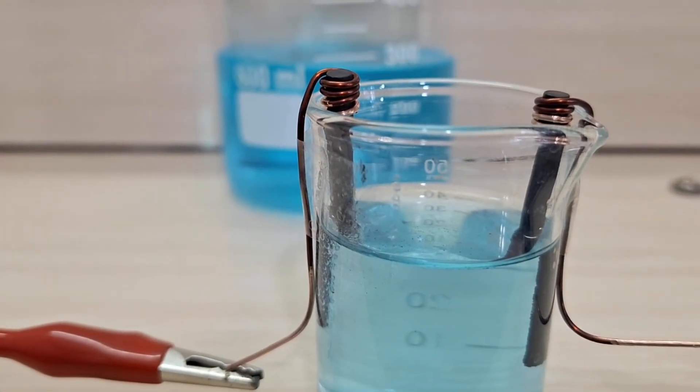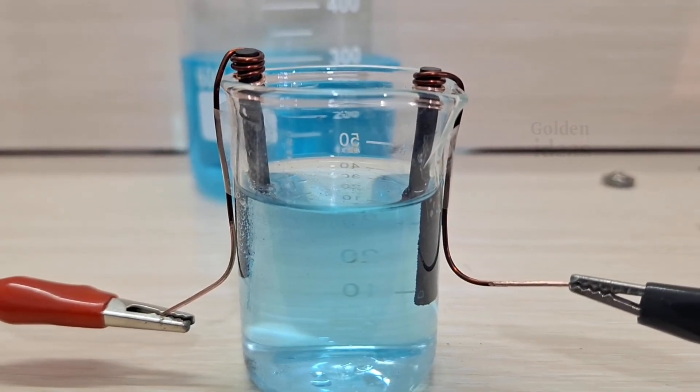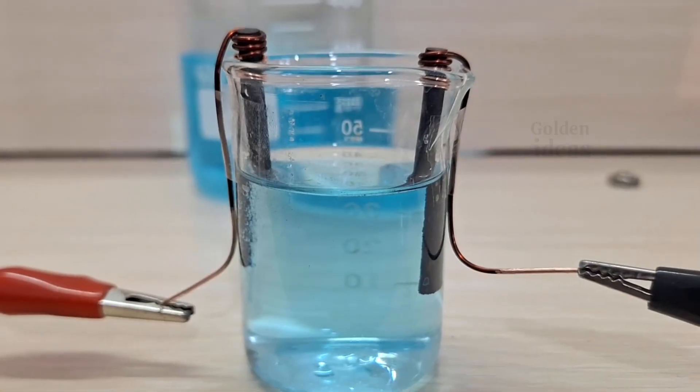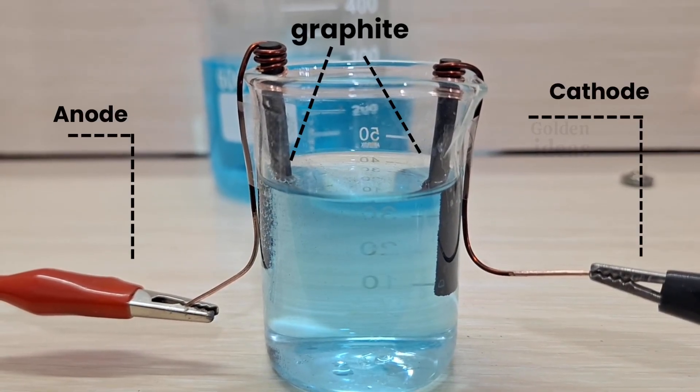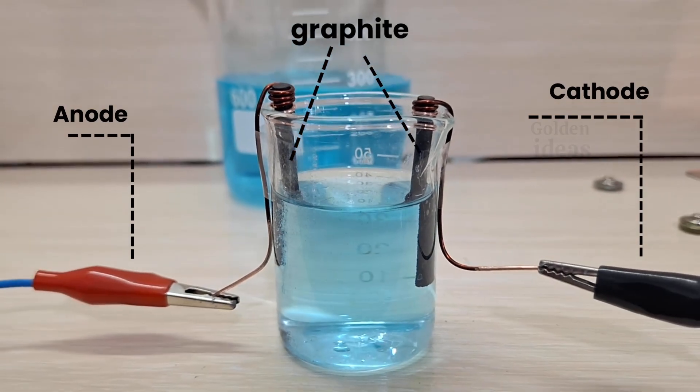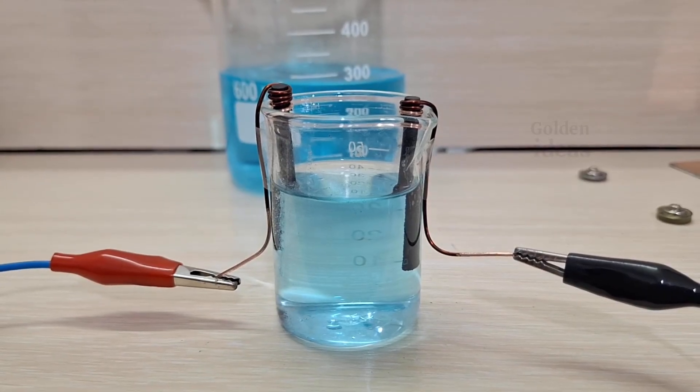So, excessive heating of the solution during electrolysis usually has two main causes. The first is high concentration of the solution, which you can fix by diluting it with distilled water. The second is high voltage applied during electrolysis. Electrolysis should be done in a way that the solution doesn't get noticeably warm.